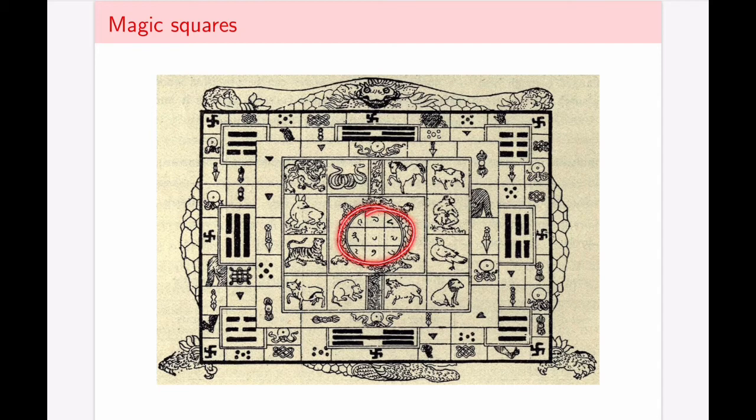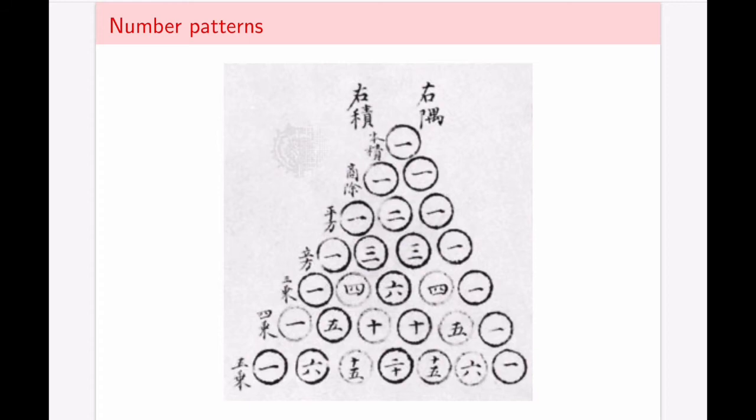We also see Pascal's triangle appear in ancient Chinese works. So a familiar 1, 1, 1, 1, 2, 1, 1, 3, 3, 1 for the binomial distribution and so on. So this shouldn't be called Pascal's triangle at all. Pascal has not lived for years and years and years after these already appeared in Chinese texts and were studied for the pattern of numbers that they are.